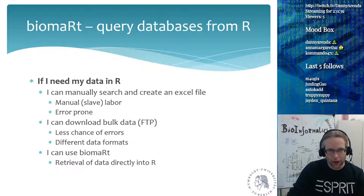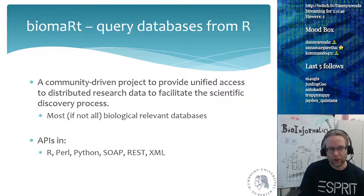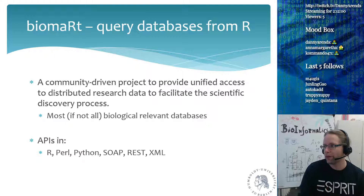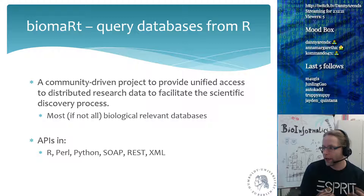Biomart allows you to query databases from R. Biomart describes itself as a community-driven project to provide unified access to distributed research data to facilitate the scientific discovery process. It contains most, if not all, biologically relevant databases, so all big biological databases have a way to be queried via Biomart. Besides being available for R, it's also available for Perl, Python, SOAP, REST, and you can even query it directly from an XML file. It's a really good way of getting your data in a structured format that you can more or less decide yourself, so you never have to reformat things just because the database changed.